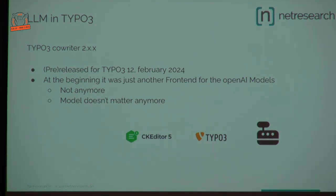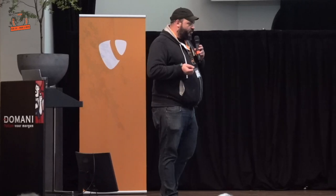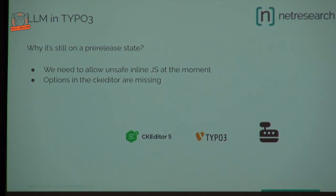For about a year, it was very quiet around the co-writer. Many people said please bring it to TYPO3 version 12, but as you know, the CK editor changed a lot between version 11 and 12, so we had a lot of work to do to bring it to version 12 — but we did it. One of the most important changes was that we gave you the ability to change the endpoint of the model. Until TYPO3 version 11 and co-writer version 1, you had to use OpenAI. Now you can use your own model if you have one. But it's still on pre-release, so it's not stable and not production-ready at the moment.